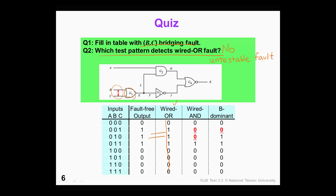The concept of untestable fault will be introduced again in a future lecture. For the wire-AND fault, when B and C are both 1, the output is exactly the same as the good circuit. We can detect this wire-AND bridging fault using two patterns. If we consider the B-dominant bridging fault, then when B is 0, we can detect this fault.